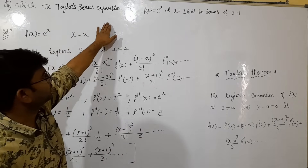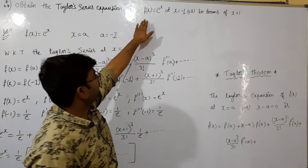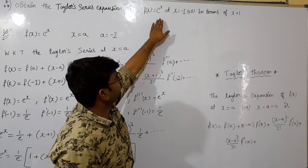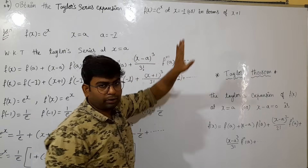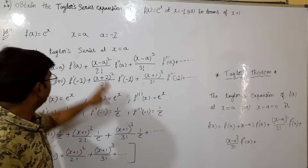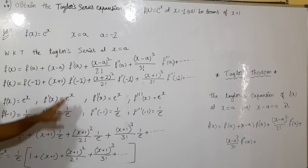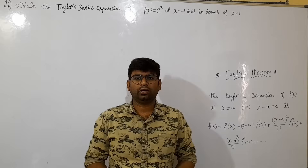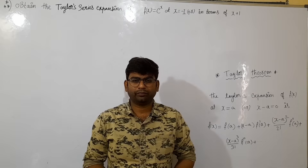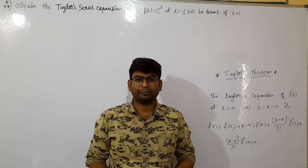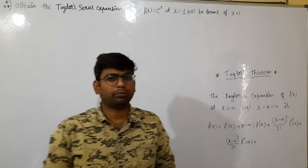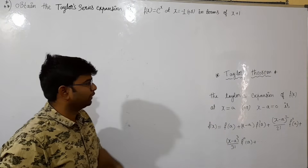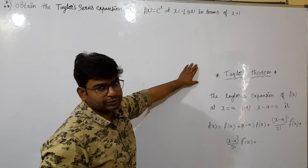In the Taylor series expansion of f(x) equals e to the power of x at x equals minus 1. Welcome back to R.S. Academy. This is Ravi. Here we go — the most important method: Taylor's theorem.